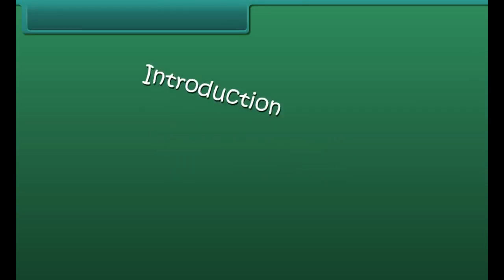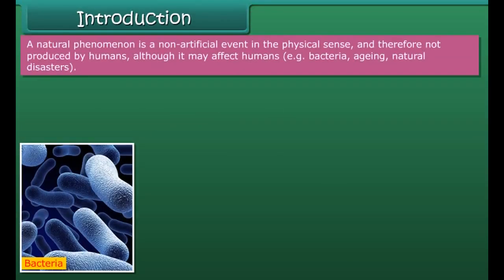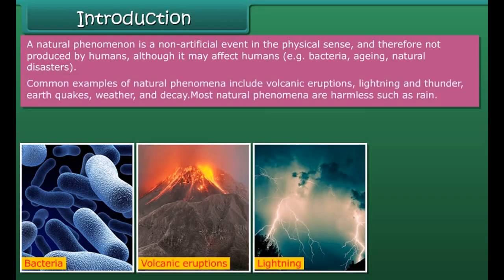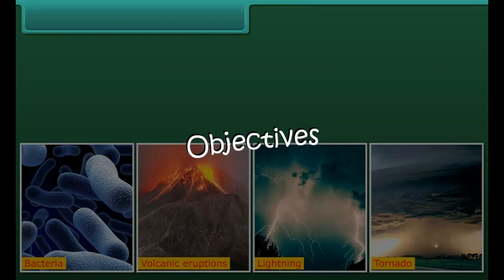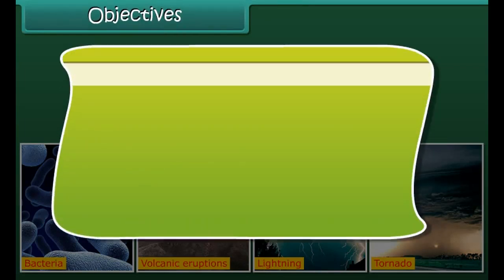A natural phenomenon is a non-artificial event in the physical world and therefore not produced by humans, although it may affect humans — such as bacteria, aging, and natural disasters. Common examples of natural phenomena include volcanic eruptions, lightning and thunder, earthquakes, weather, and decay. Most natural phenomena are harmless, such as rain.